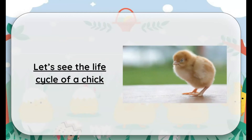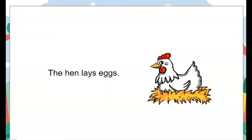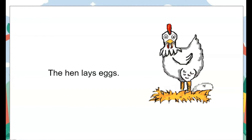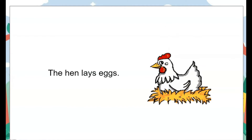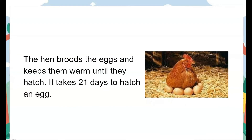Let's see how a chick comes out of an egg and turns into a hen. The hen lays eggs. The hen broods the eggs and keeps them warm until they hatch. It takes 21 days to hatch an egg.